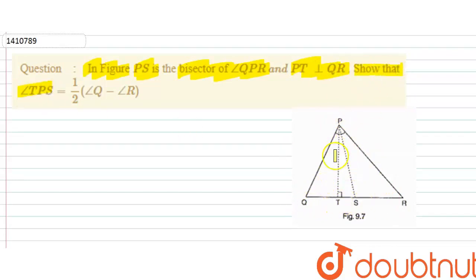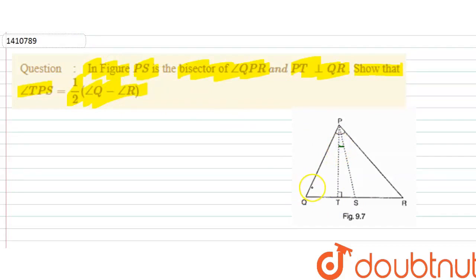Then we have to show that angle TPS is equal to half of angle Q minus half of angle R. So TPS is this angle, angle Q is this angle, and angle R is this angle. Let's show it.